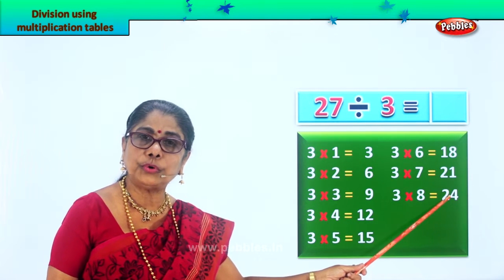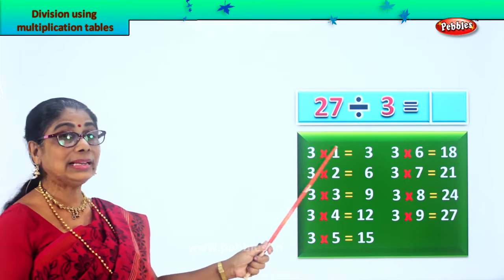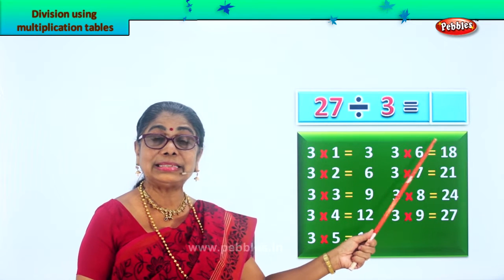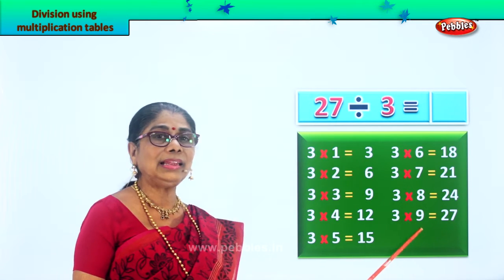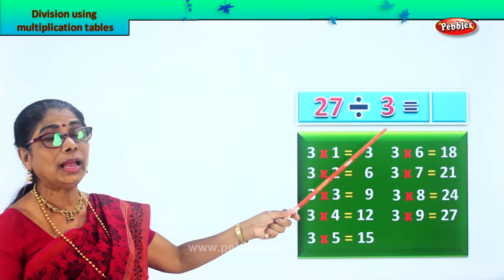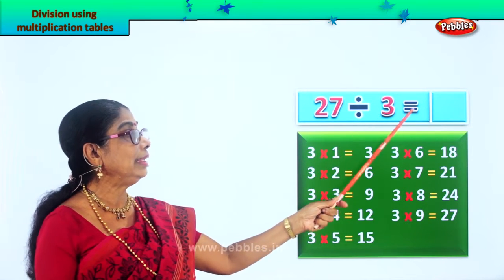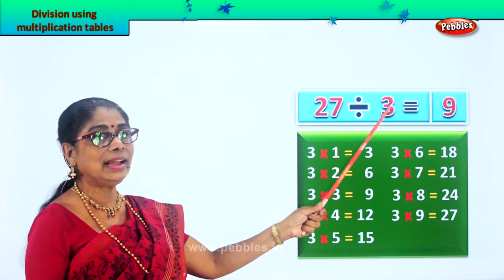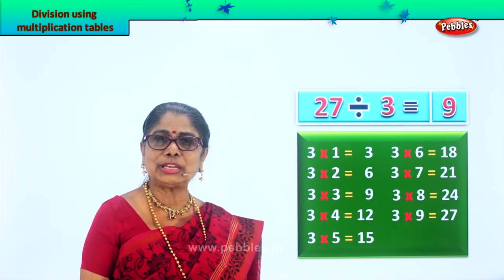Three eights are 24, three nines are 27. We are grouping 27 into 3 equal groups — how many will we get in each group? 9. 27 divided by 3, the answer is 9. In reverse multiplication, 9 threes are 27, and 3 nines are 27. Did you enjoy finding the answer using multiplication?